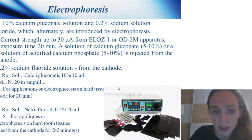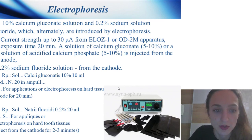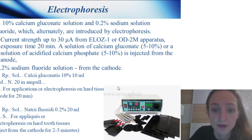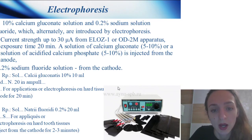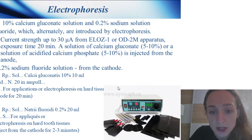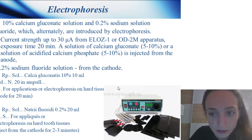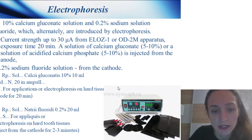Ways to improve the effectiveness of remineralizing therapy: removal of dental plaque, drying teeth, and application of solutions with calcium phosphate at pH 7.3, and raising the temperature of the solution by heating up to 40 degrees. Electrophoresis: 10% calcium gluconate solution and 0.2% sodium fluoride solution, which are alternatively introduced by electrophoresis. Current strength up to 30 microamperes, using special equipment such as ALOS-1 or OD-2M. Exposure time: 20 minutes.